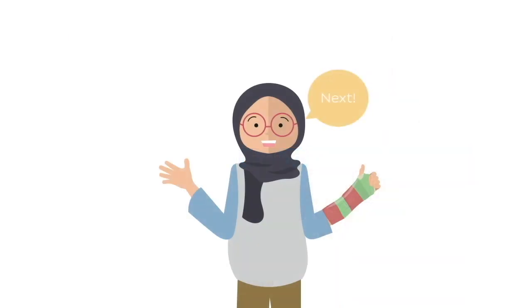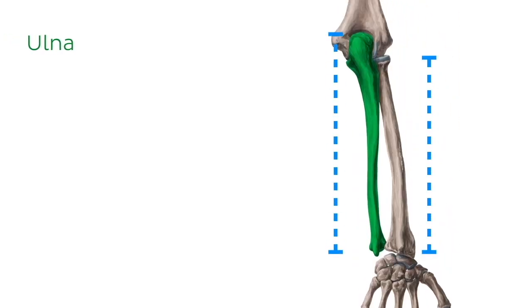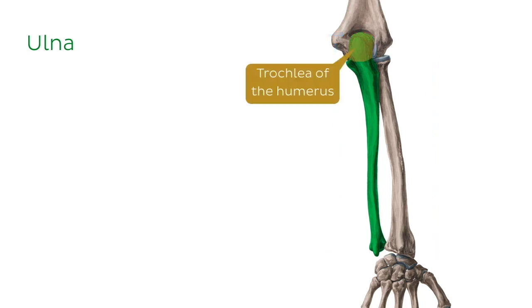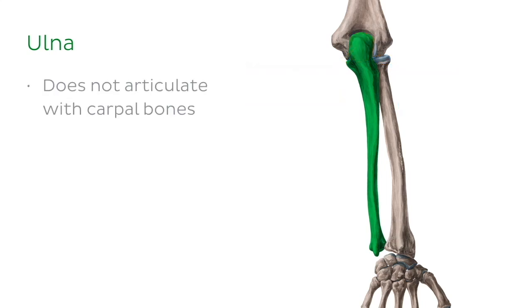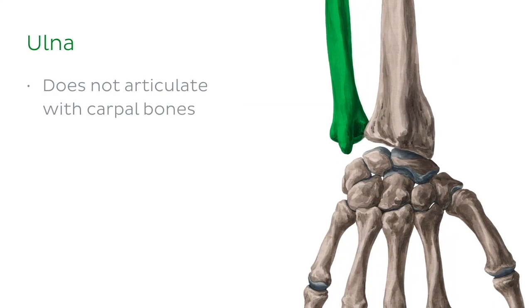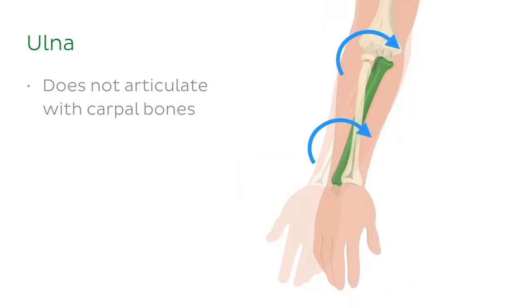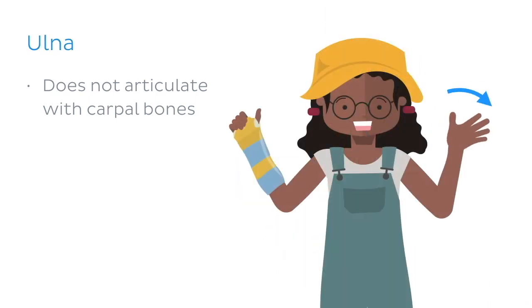Now let's head straight onto the neighbour of the radius, which is, of course, the ulna. The ulna is the longer of the two bones of the forearm. It articulates proximally with the trochlea of the humerus, as well as with the head of the radius. Distally, it again articulates with the radius. However, the ulna does not articulate directly with any of the carpal bones of the wrist joint. Instead, it is separated from them by a small articular disc, which allows for a greater degree of rotation of the forearm as well as ulnar deviation of the hand.